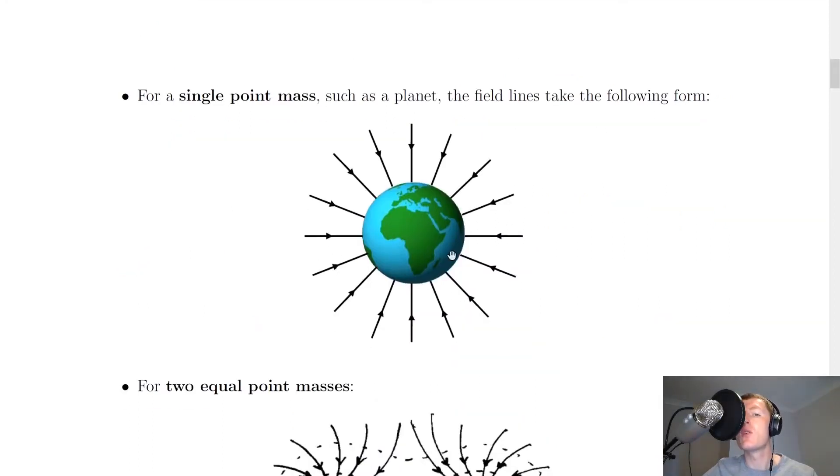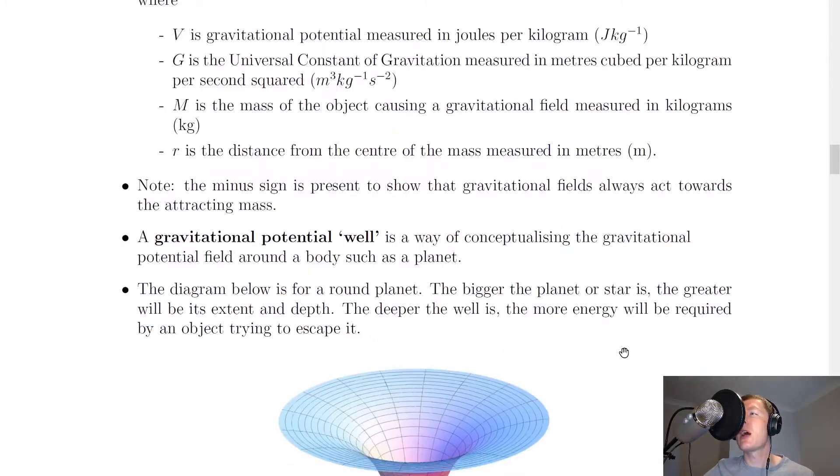So looking back in the notes, remember we saw for a planet, the gravitational field lines around that planet would look like this, going towards the center of the planet. So just to help you visualize this concept, I'm going to show you an animation.